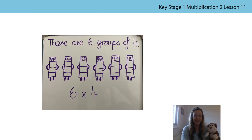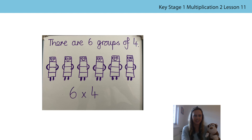This is the picture that Bongo and I drew to represent six groups of four. We used number block four — he represents one group of four because he's made up of four blocks. So we've got one four, two fours, three fours, four fours, five fours, six fours — six groups of four, or six times four. We also wrote the multiplication expression to represent our picture. I wonder if your pictures look similar to the one that Bongo and I drew.